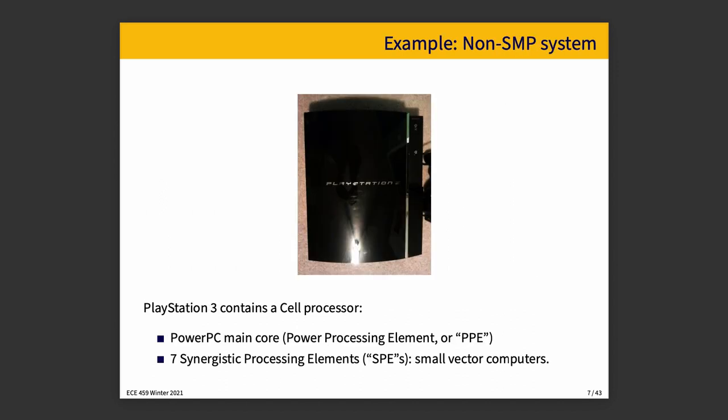The non-SMP PlayStation 3 has a PowerPC main core but seven synergistic processing elements, SPEs — basically very good at drawing things for graphics. They are special-purpose processors, so they're not good for everything but very good at the one thing they do. That makes it not a symmetric multi-processing system because the different processors, being specialized, can't all do the same thing — not everything is equally substitutable.